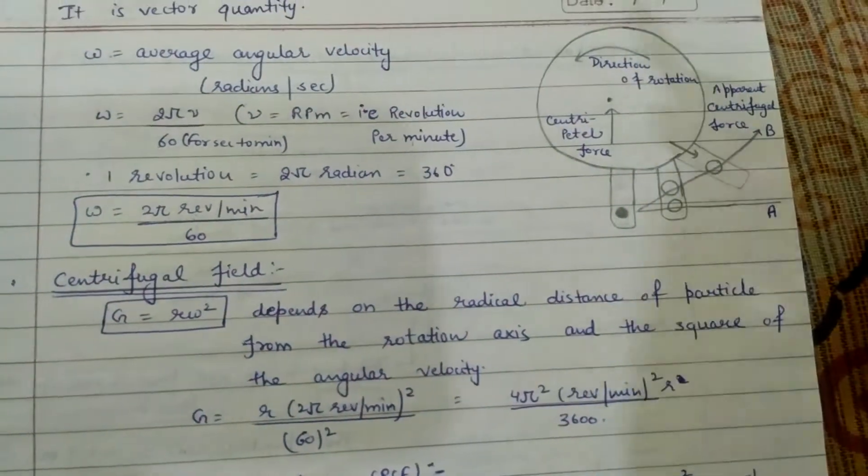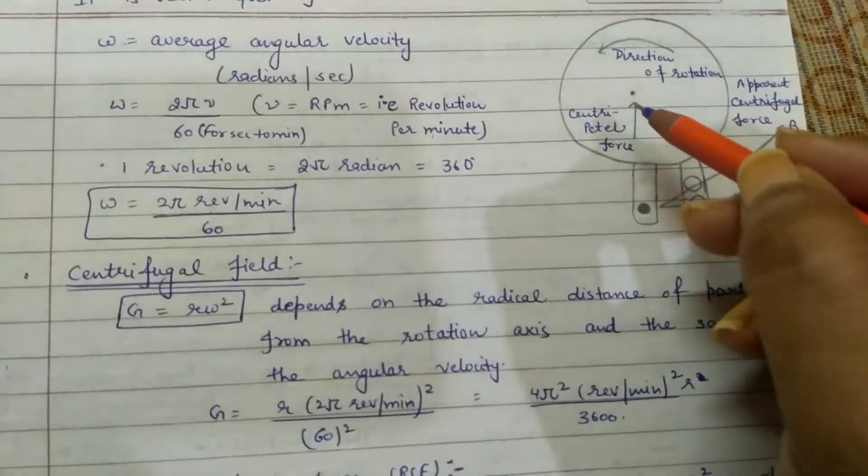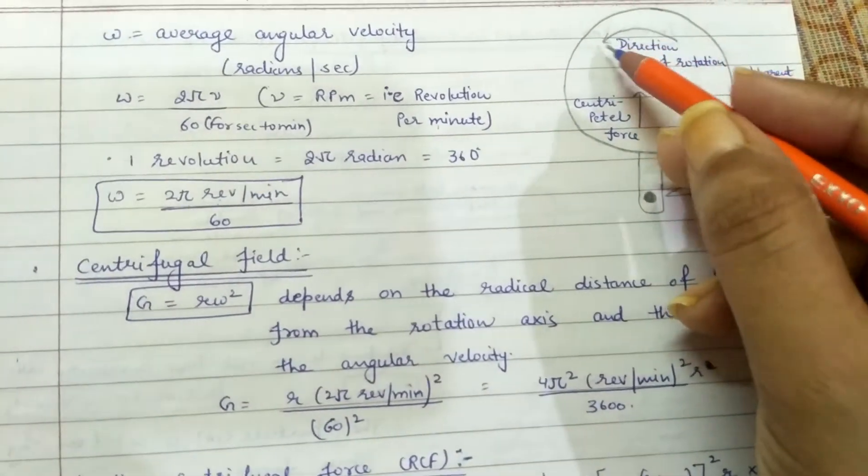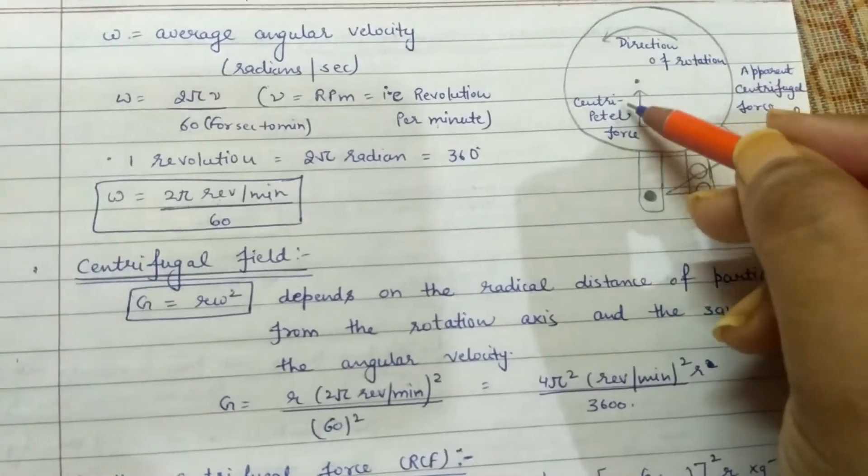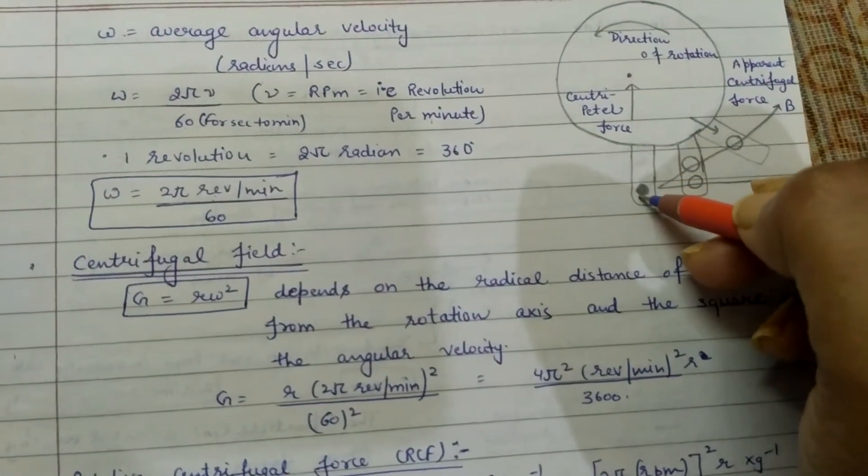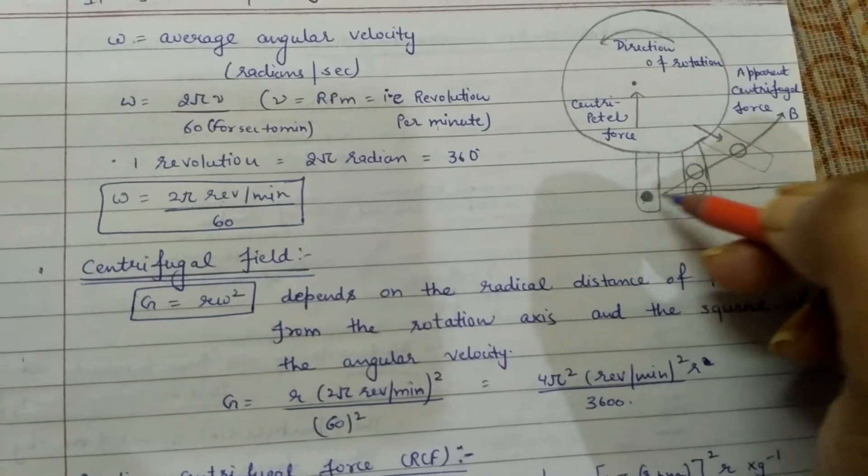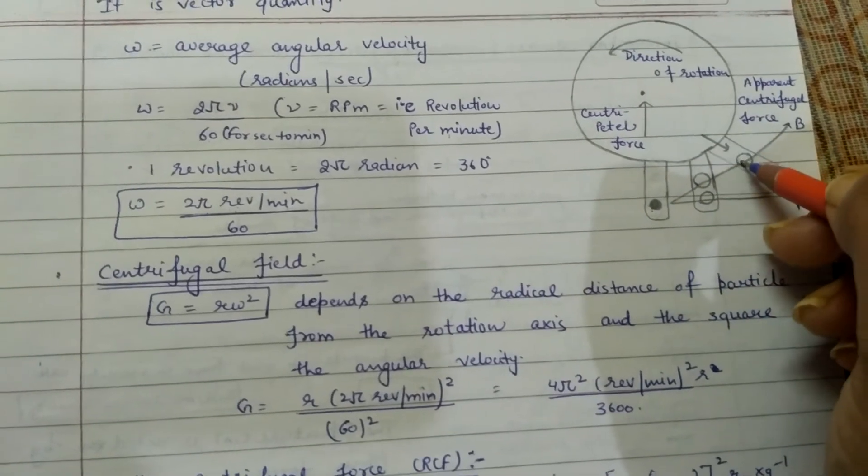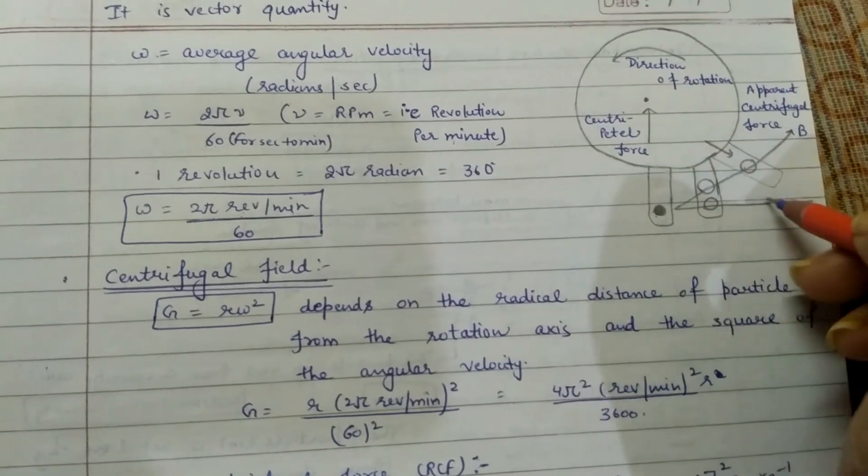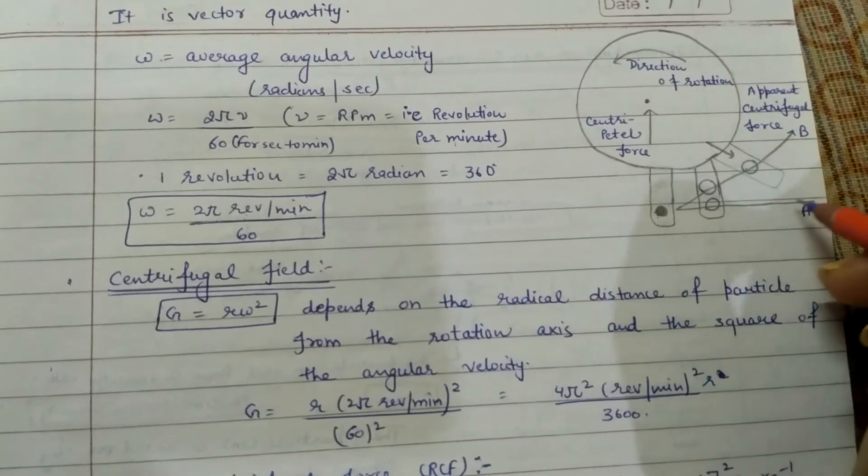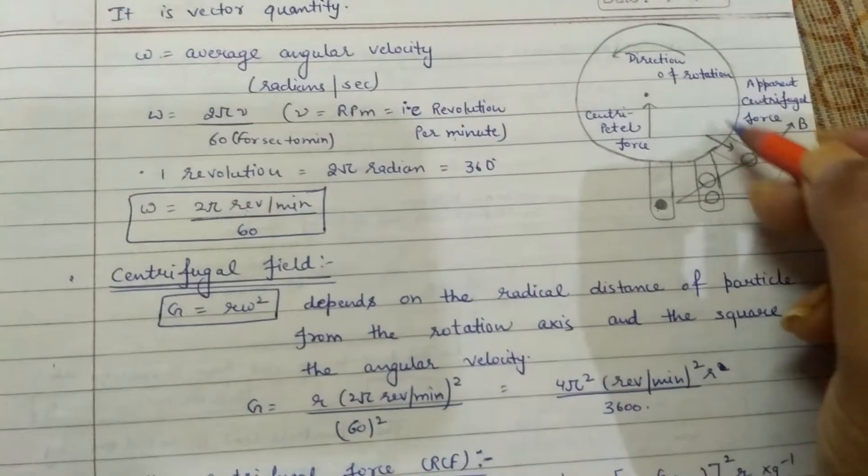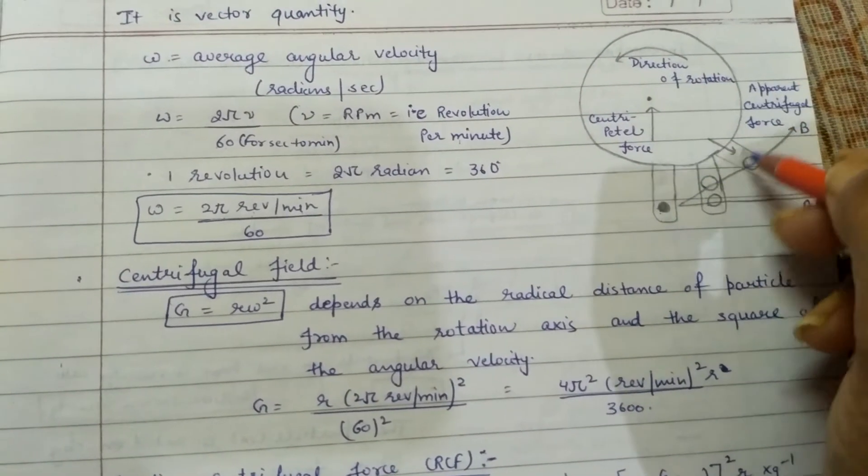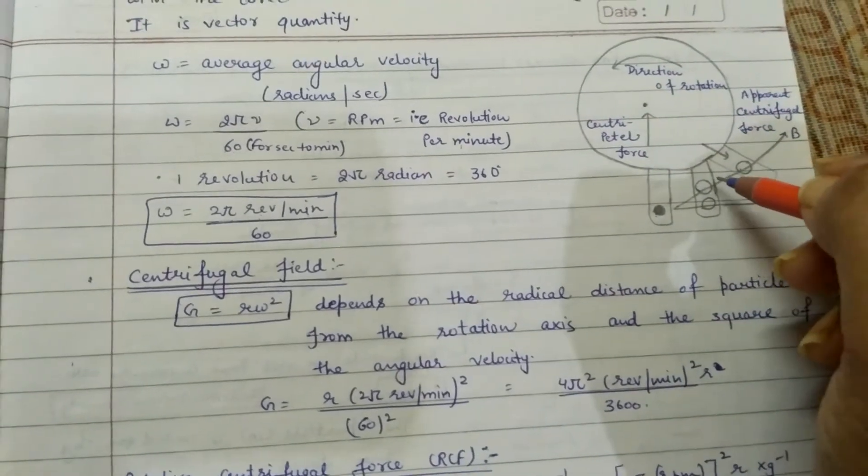In the centrifuge machine, there is the center with the direction of rotation. The centripetal force pulls toward the center, but when the particle moves through rotation, it experiences centrifugal force moving outward in a straight line.